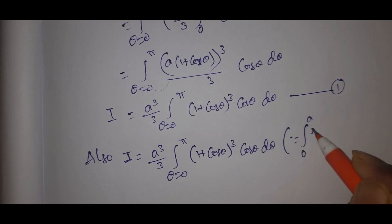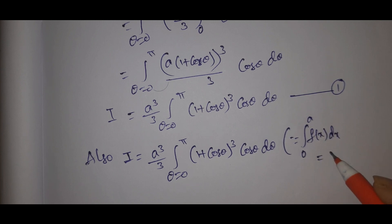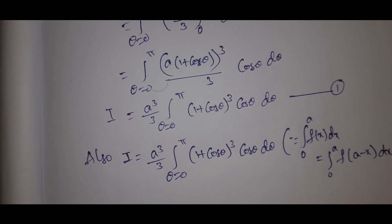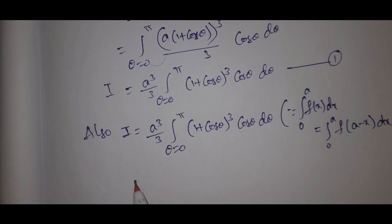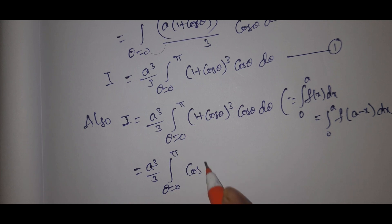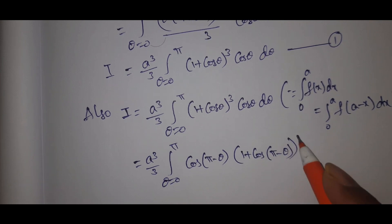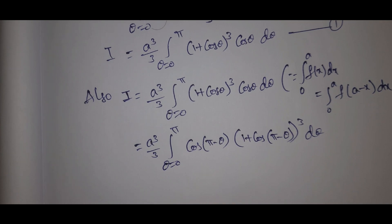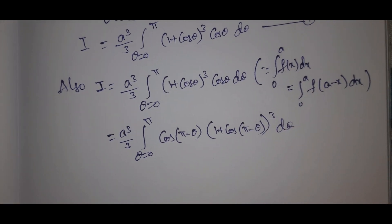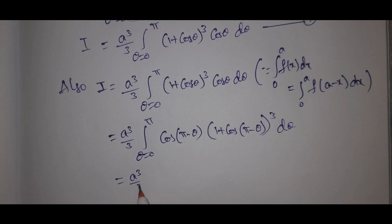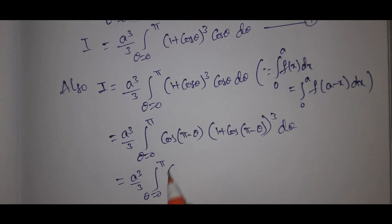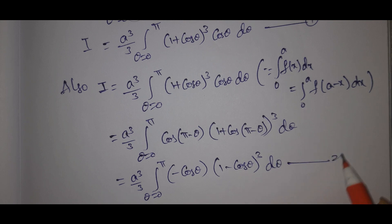Let I = a³/3 · integral from θ = 0 to pi of (1 + cos θ)³ · cos θ dθ. We apply the property: integral 0 to a of f(x) dx = integral 0 to a of f(a − x) dx. Replacing θ with (π − θ): cos(π − θ) = −cos θ and 1 + cos(π − θ) = 1 − cos θ. So I = a³/3 · integral from 0 to pi of −cos θ · (1 − cos θ)³ dθ. This is equation number 2.